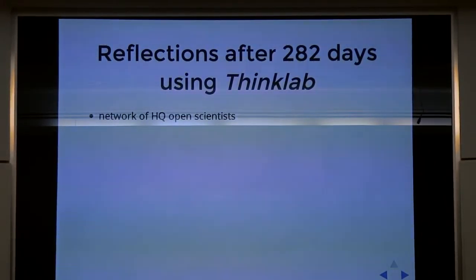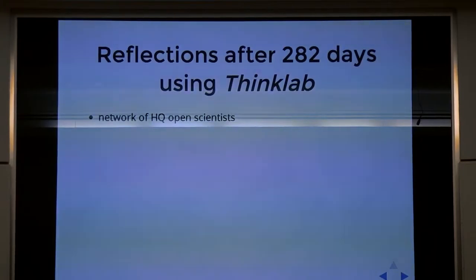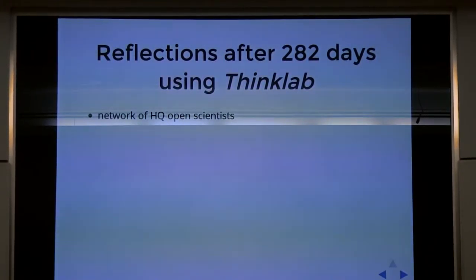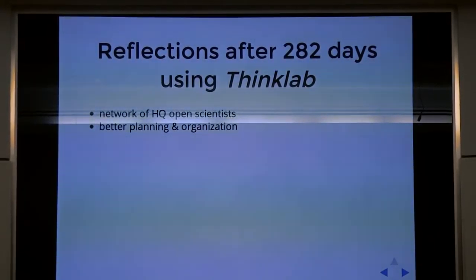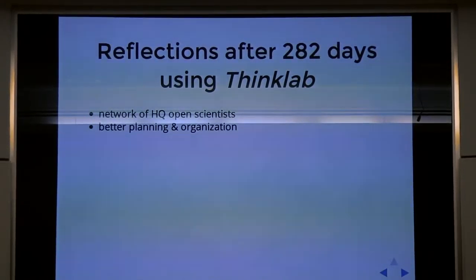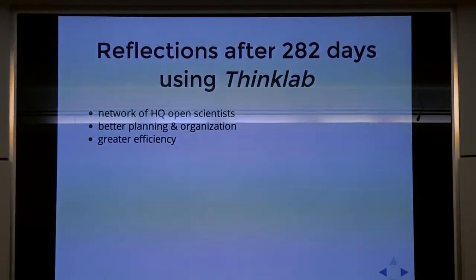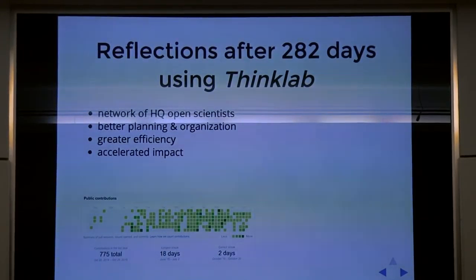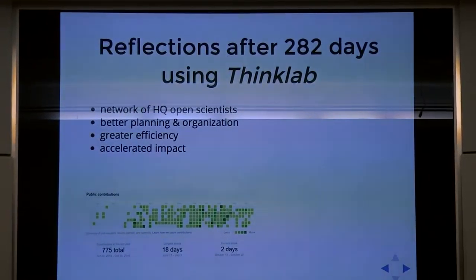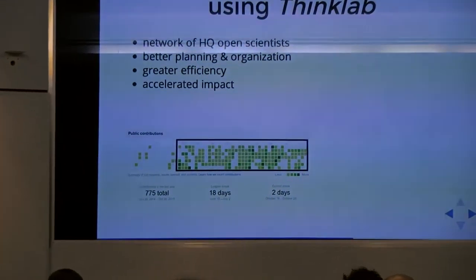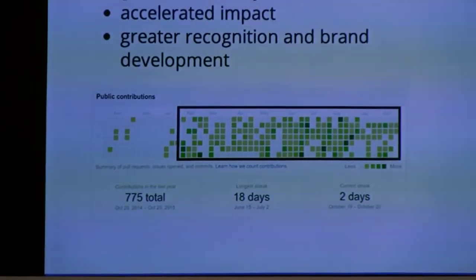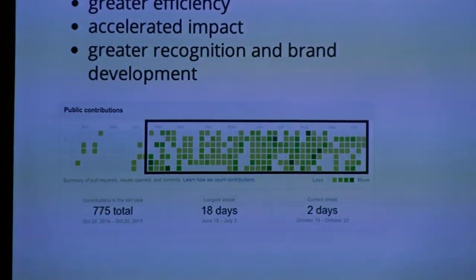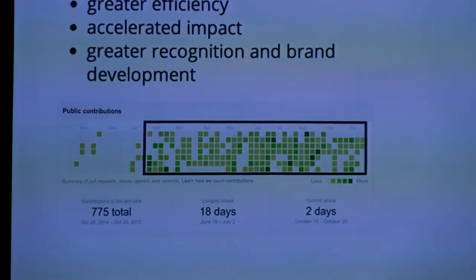Here are my reflections. Doing science openly and in real time has allowed me to assemble a high-quality network of open scientists. It's made me think before I do something because I have to justify it in writing, and I have a record of everything I did and why, leading to better efficiency and accelerated impact. Here are my public contributions on GitHub — you can see very clearly when I started doing ThinkLab, because I started making way more public contributions, along with much better recognition and personal development.